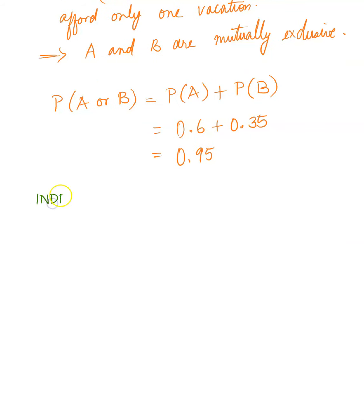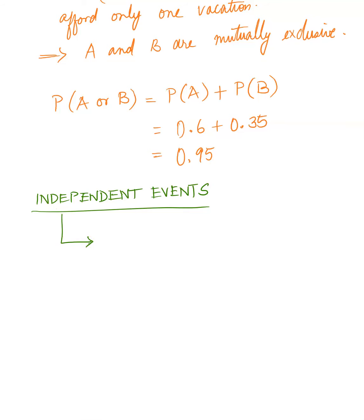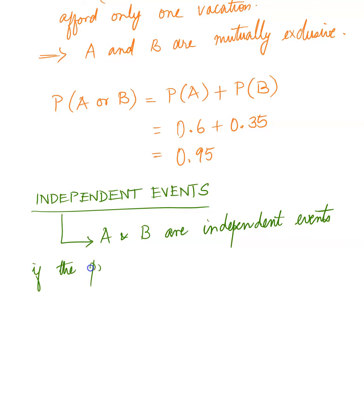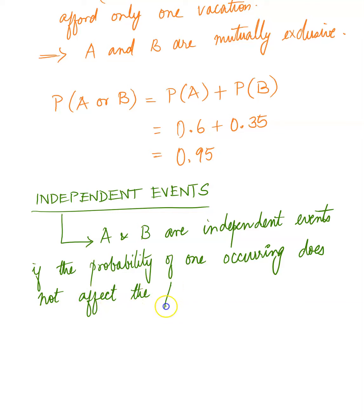Now let's talk about independent events. You know that mutually exclusive events means the two events cannot occur at the same time. Independent events means that the probability of one occurring does not affect the probability of the other happening. A and B are independent events if the probability of one occurring does not affect the other happening.